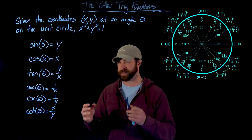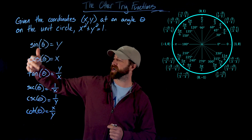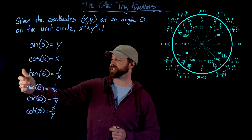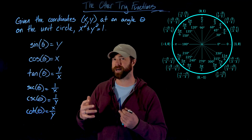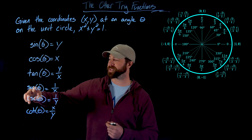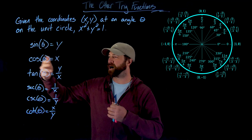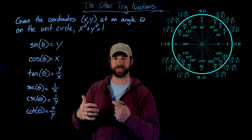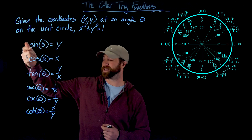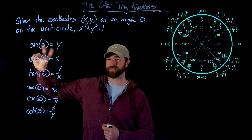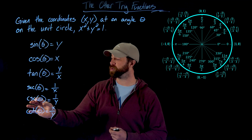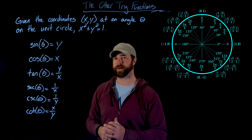Part of memorizing this is the fact that sine is related to cosecant and cosine is related to secant. The way I think about it is that the 's' in sine is related to the 'c' in cosecant, and the 'c' in cosine is related to the 's' in secant. Tangent and cotangent are related to each other. So sine and cosecant are just flipped versions of each other — sine is the y value and cosecant is 1 over y.